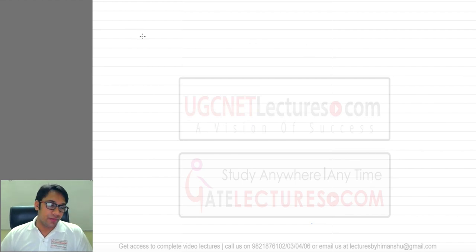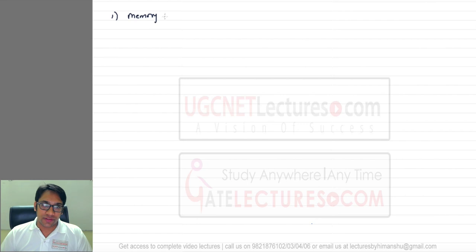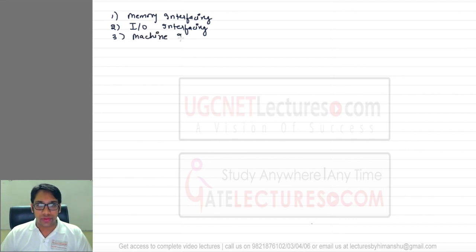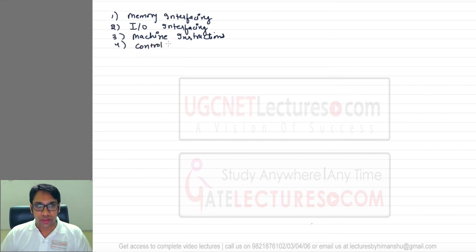The next topic is computer organization and architecture. The syllabus for this subject can be categorized as follows. The first chapter is memory interfacing, then we'll be discussing input-output interfacing, and after that we are going to discuss machine instructions.